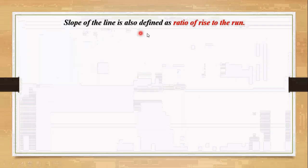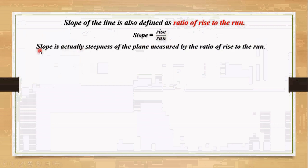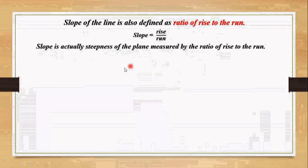The slope of the line is also defined as the ratio of rise to run. Slope equals rise by run. The slope is the steepness of a plane measured by the ratio of rise to run.